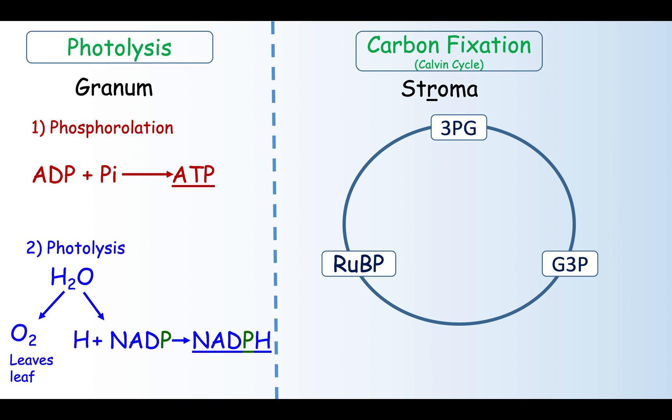The enzyme rubisco fixes carbon dioxide by attaching it to RUBP. The 3-PG produced is phosphorylated by ATP and combined with the hydrogen from NADPH to form G3P.